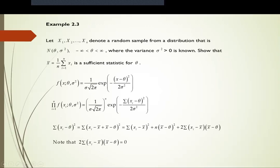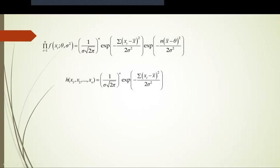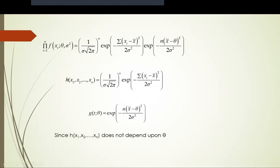Based on this factorization, h(x) = [1/(sigma*sqrt(2*pi))]^n * exp(-summation(xi - x-bar)^2 / (2*sigma^2)), which does not depend upon theta. The other part, exp(-n*(x-bar - theta)^2 / (2*sigma^2)), constitutes the function g, where t = x-bar is the sufficient statistic for theta. Since h does not depend upon theta, by the Factorization Theorem, x-bar is confirmed as a sufficient statistic for theta.